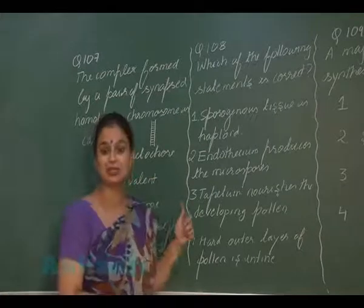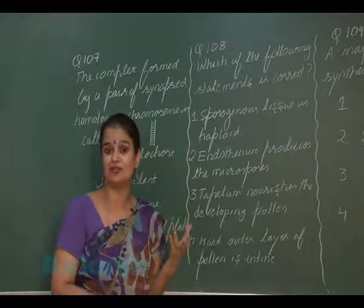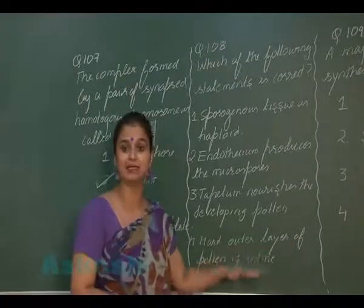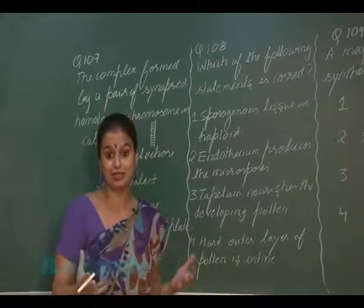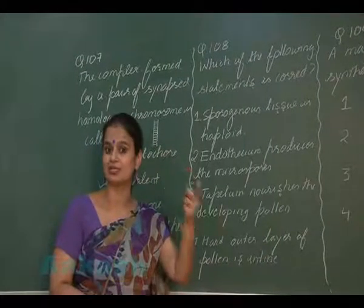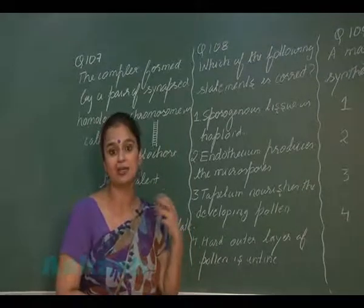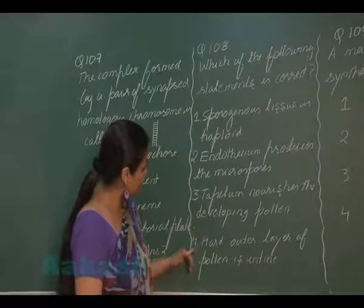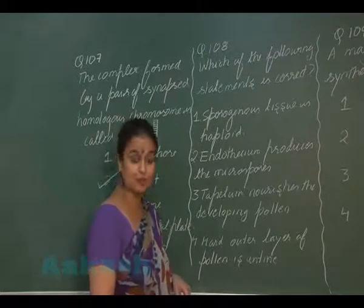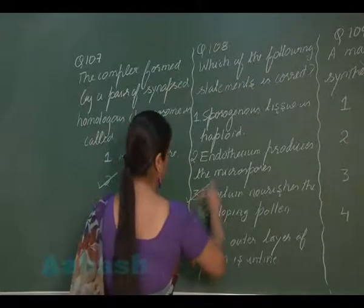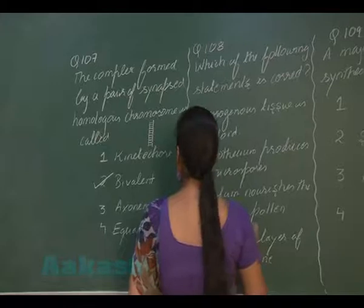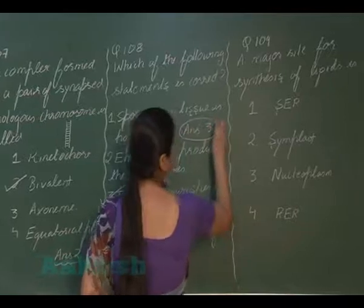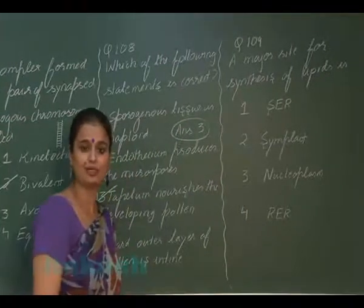The third option states tapetum is a nutritive layer which helps in the development of pollen — this is correct. The fourth option states the hard outer layer of pollen is intine — this is incorrect. Pollen grain consists of two wall layers: the outer is exine and the inner is intine. The hard one is exine, not intine. So this option is also incorrect. The correct option is the third one — tapetum is the nutritive layer. The right answer is option 3.